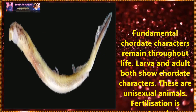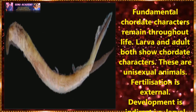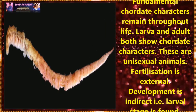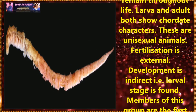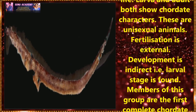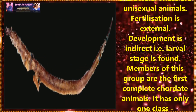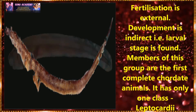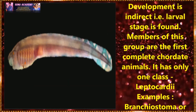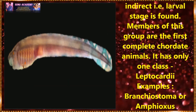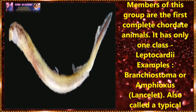Larvae and adults both show chordate characters. These are unisexual animals. Fertilization is external. Development is indirect, that is, a larval stage is formed. Members of this group are the first complete chordate family.